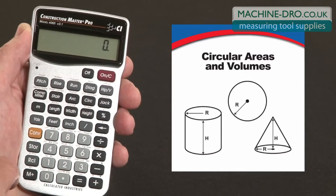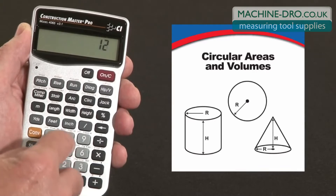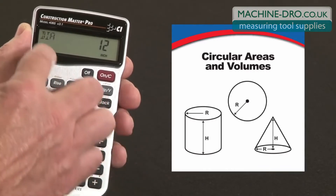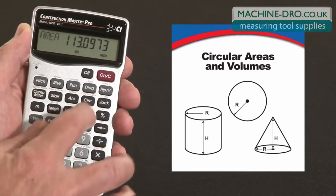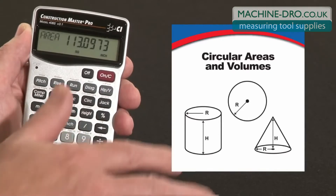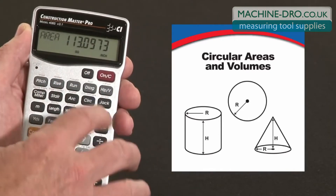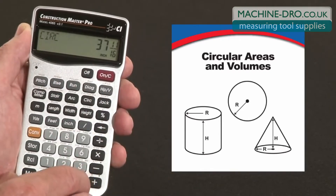You start off by entering the diameter — let's say 12 inches — and hit Circle. That's the diameter. Press it again and it gives you the surface area at the top of that circle. Press it again and it gives you the circumference around that circle.